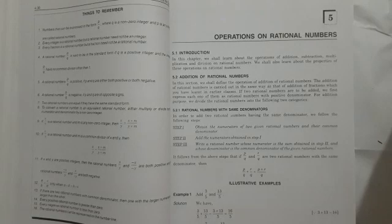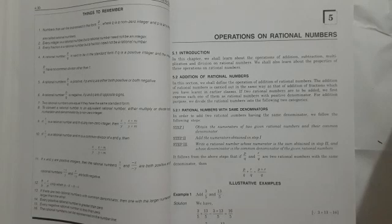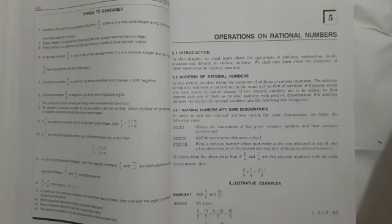Good morning. As you know, we have done yesterday 4.6, so along with that exercise our chapter has completed. Today we are starting your next chapter, that is chapter number 5, and the name is Operations on Rational Numbers.